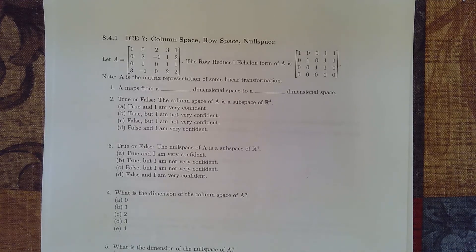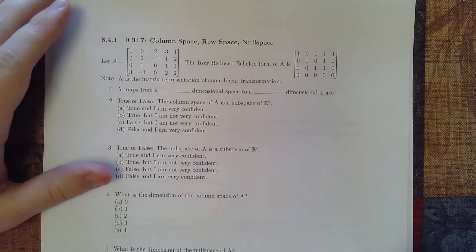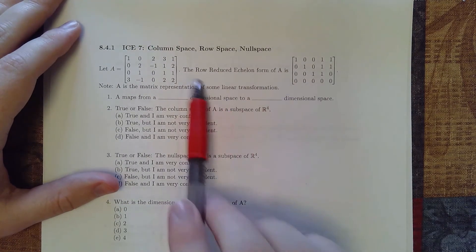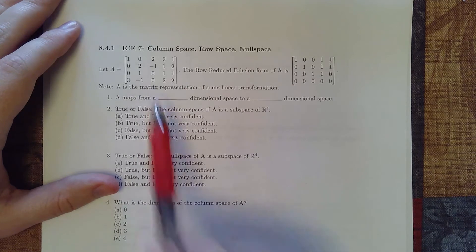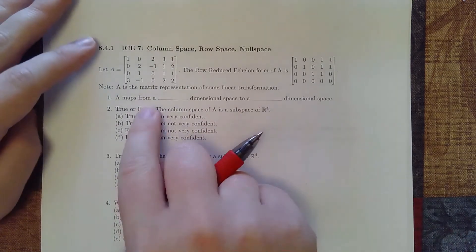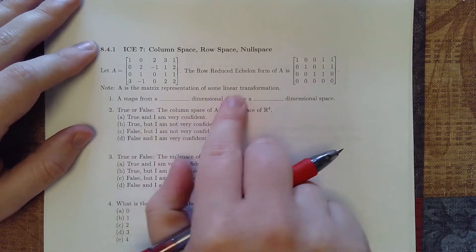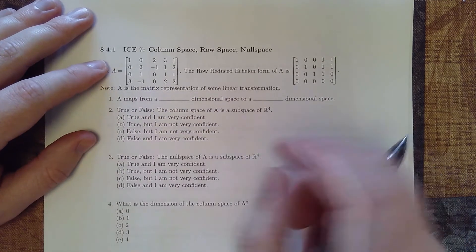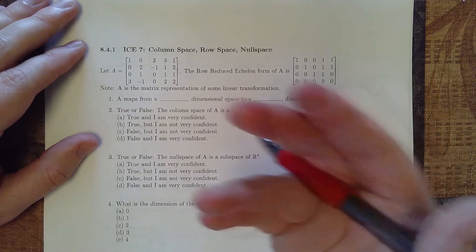All right, so let's see if we can play around with these ideas of trying to find some of these null spaces and column spaces for a matrix. I guess null space is twice there. All right, so we want to first figure out A is representing some sort of linear transformation, we want to figure out what sort of spaces it's going to and from.